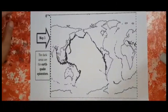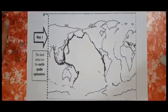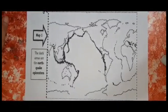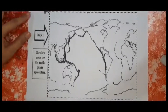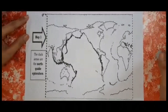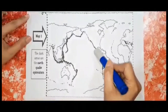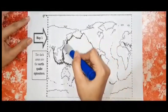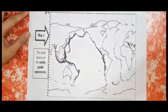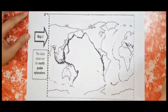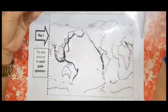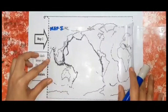Let us now do the activity on page 6 entitled 'Remember Where the Edges Meet.' In the picture, it shows the earthquake distribution around the world. The dark areas are the earthquake epicenters. Now let us trace the earthquake epicenters in the plastic cover.